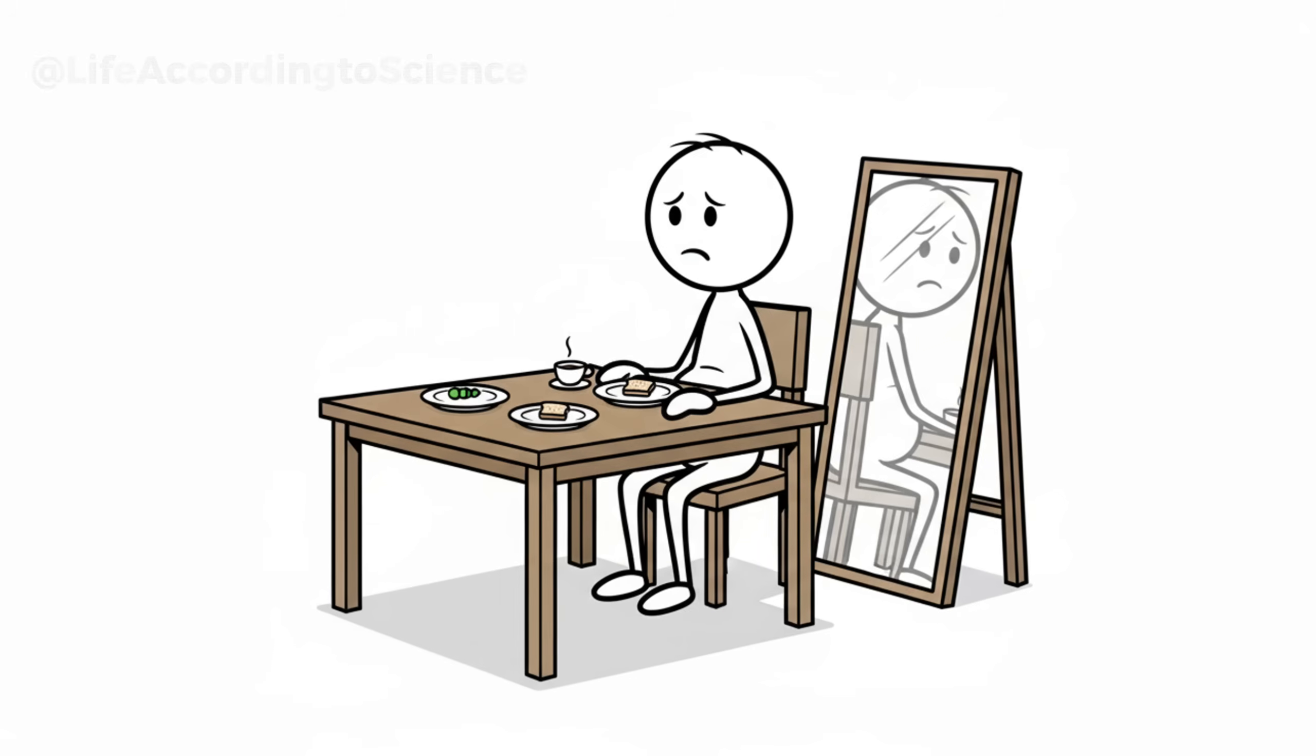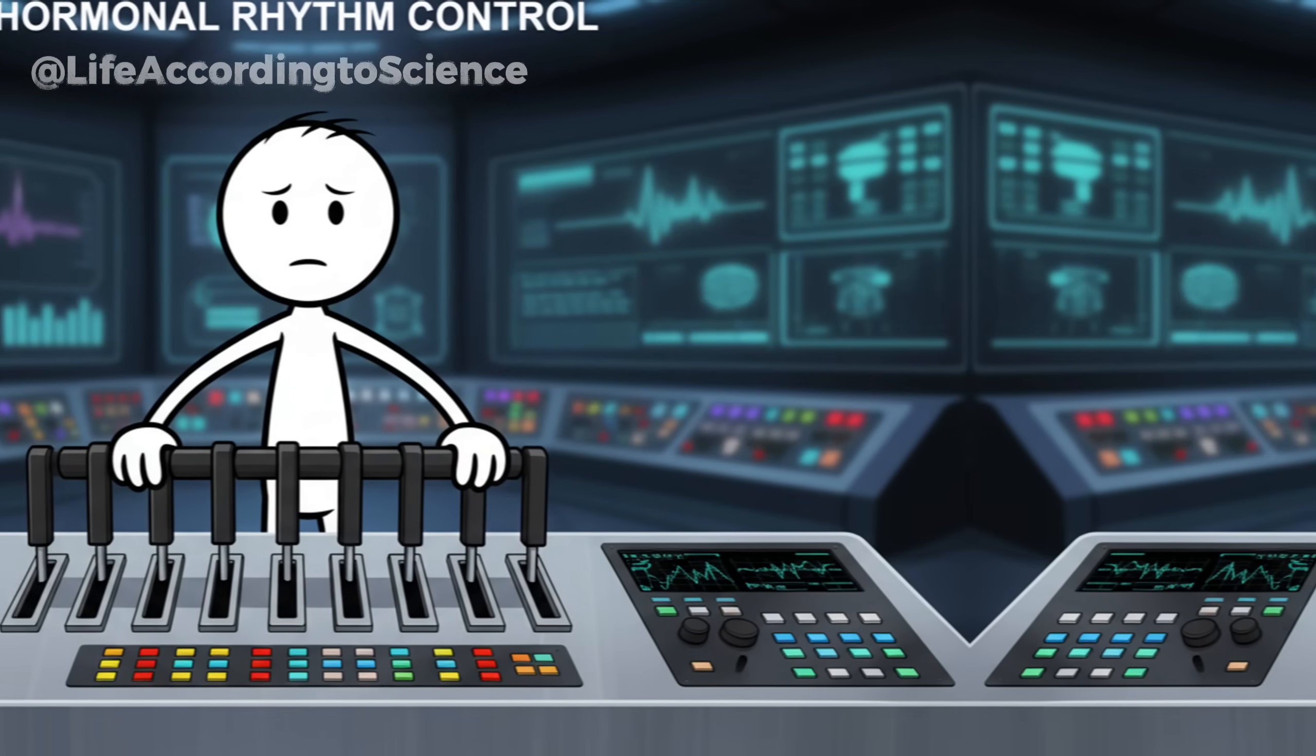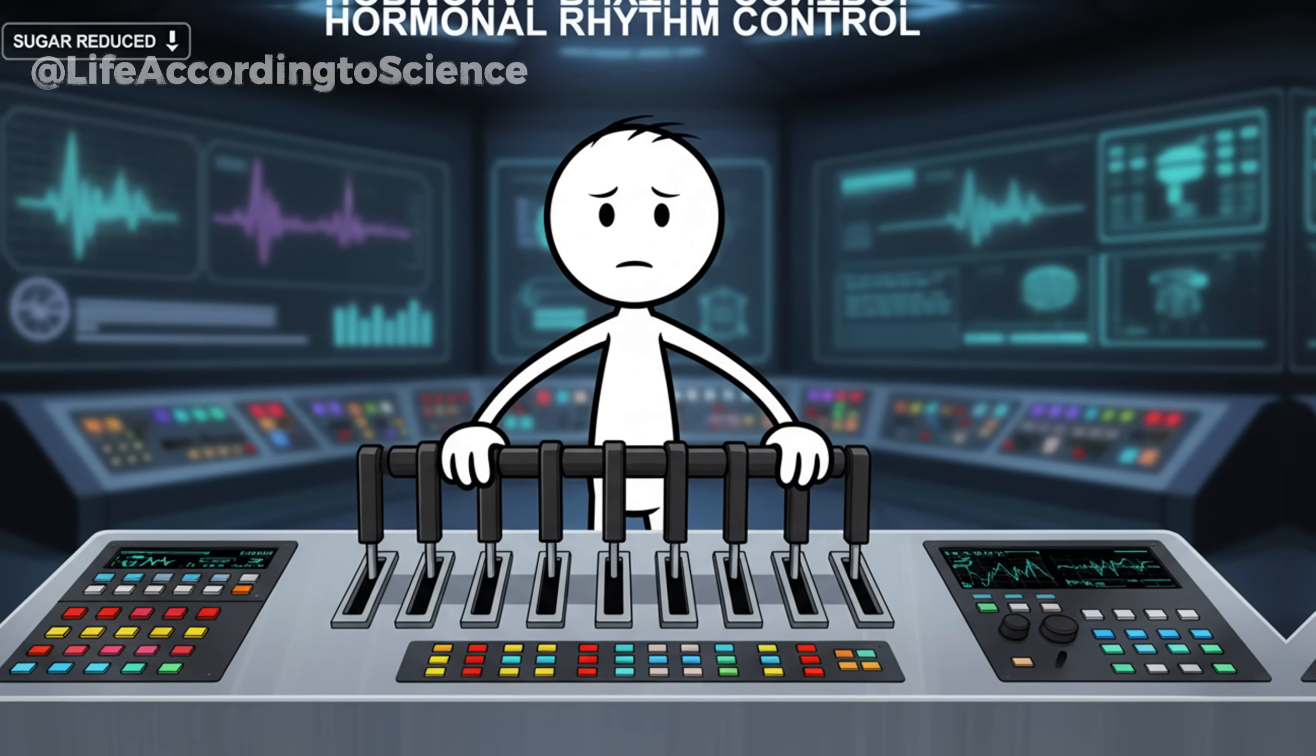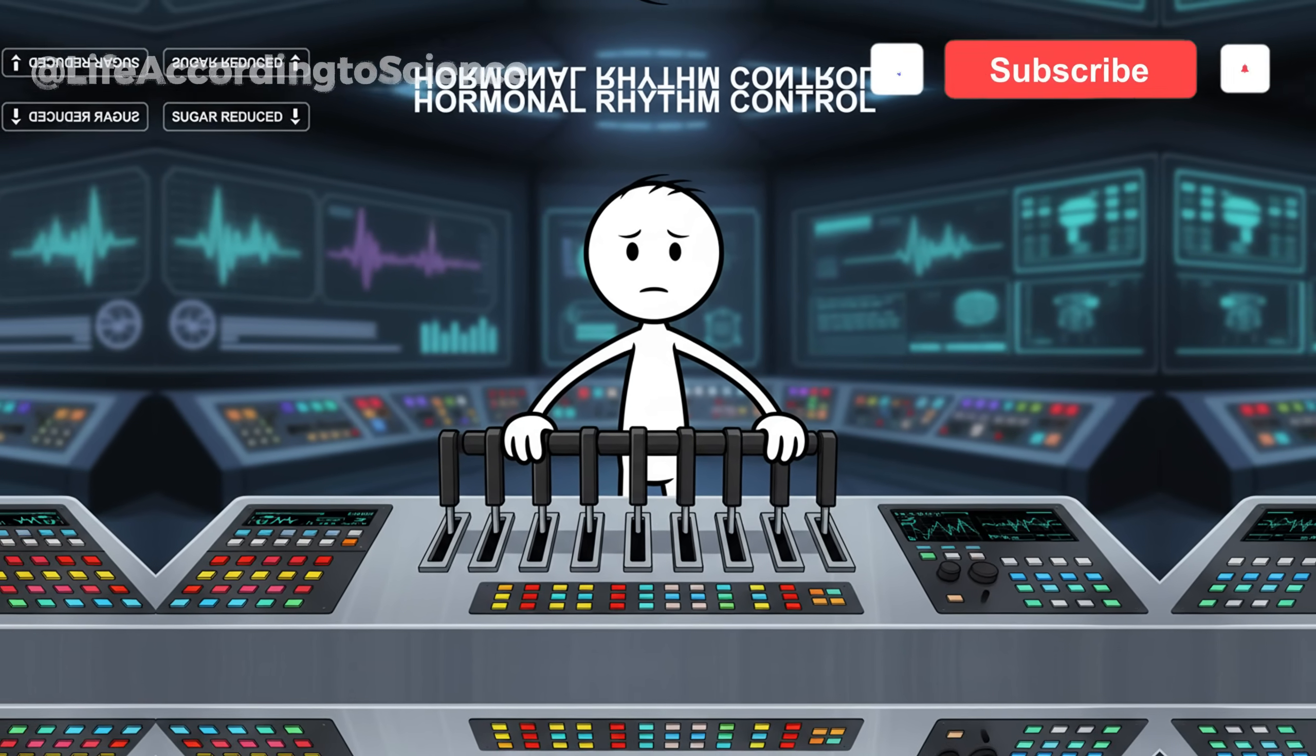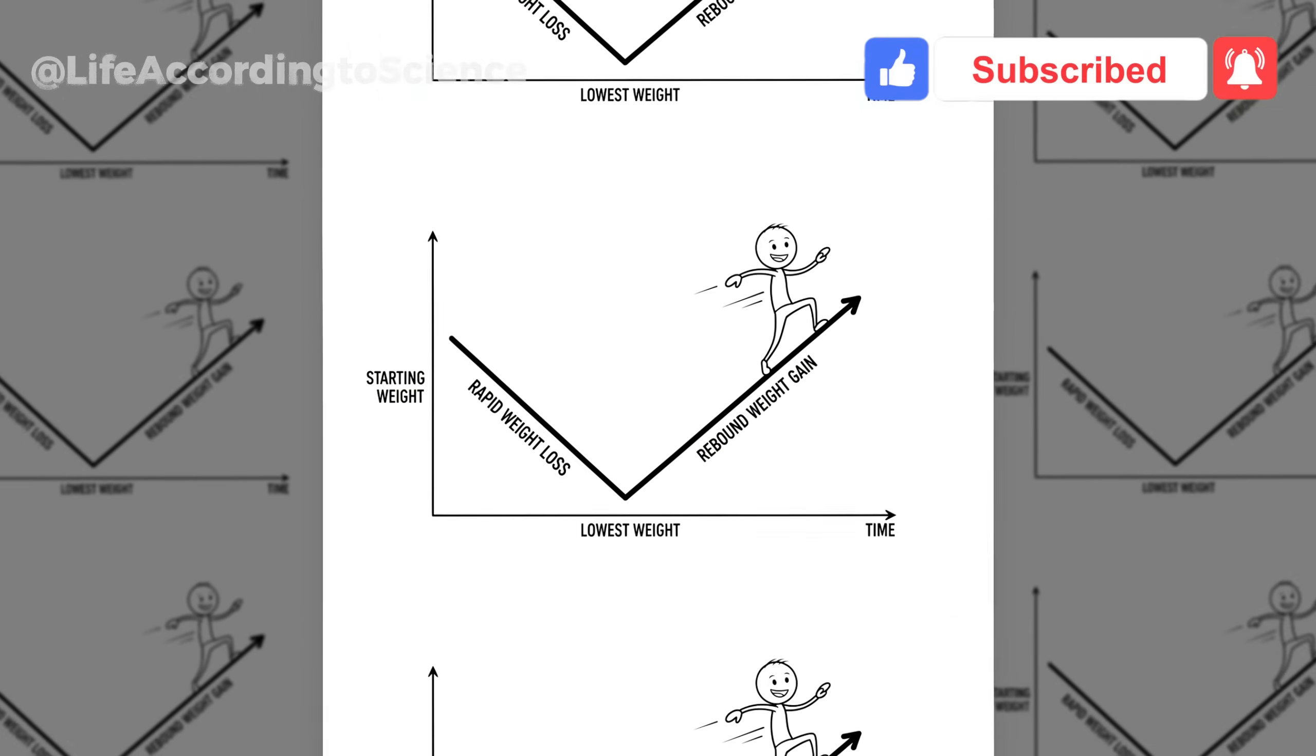That's why people often say, I don't eat much, but I still gain belly fat. The problem isn't calories. It's insulin mismanagement. Reducing sugar isn't just about willpower. It's about reprogramming your hormonal rhythm. Once you lower insulin levels, your body finally gets permission to tap into its fat stores again.